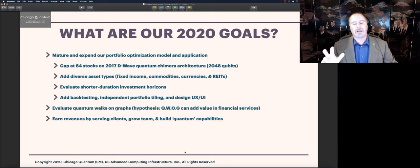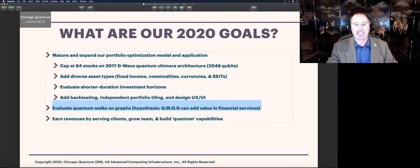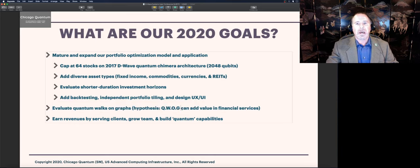What does it mean, independent portfolio tiling? So we just got feedback. We're picking 64 random stocks. The question is, can you really put those together? Could you look at 640 stocks by running this 10 times and then putting the answers together? We're going to find that out and we're going to add that into our model. We're also evaluating right now quantum walks on graphs. We're testing a hypothesis that says quantum walks on graphs can and will add value in financial services. And Chicago quantum is going to be one of those firms that you can come to to learn about it. Our hope is to earn revenues by serving clients. That way we can grow the team and build even more capabilities.